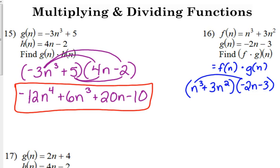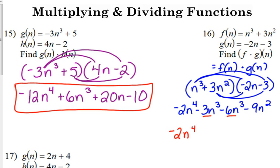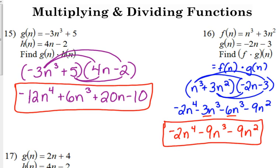n cubed times negative 2n, negative 2n to the 4th. Outside, n cubed times negative 3, negative 3n cubed. Inside, 3n squared times negative 2n, negative 6n cubed. And our last, 3n squared times negative 3, negative 9n squared. This one, we do have like terms. We have 2 n cubed terms. So negative 2n to the 4th minus 9n cubed and minus 9n squared is our final answer.